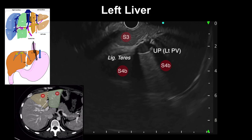Segment 3 is seen close to the transducer, above the umbilical portion of the left portal vein, and segment 4b is seen below.